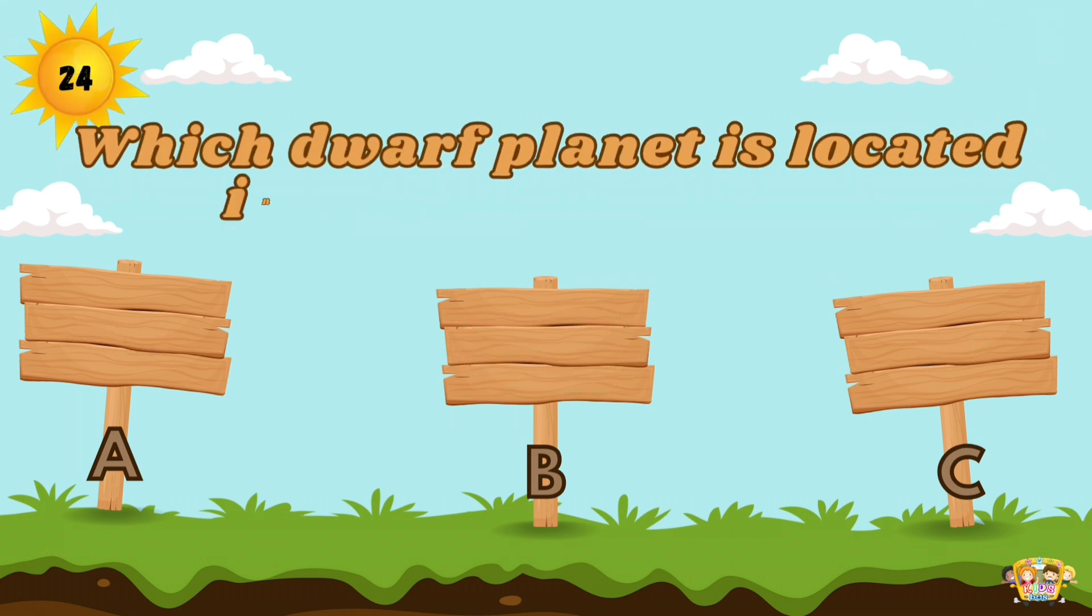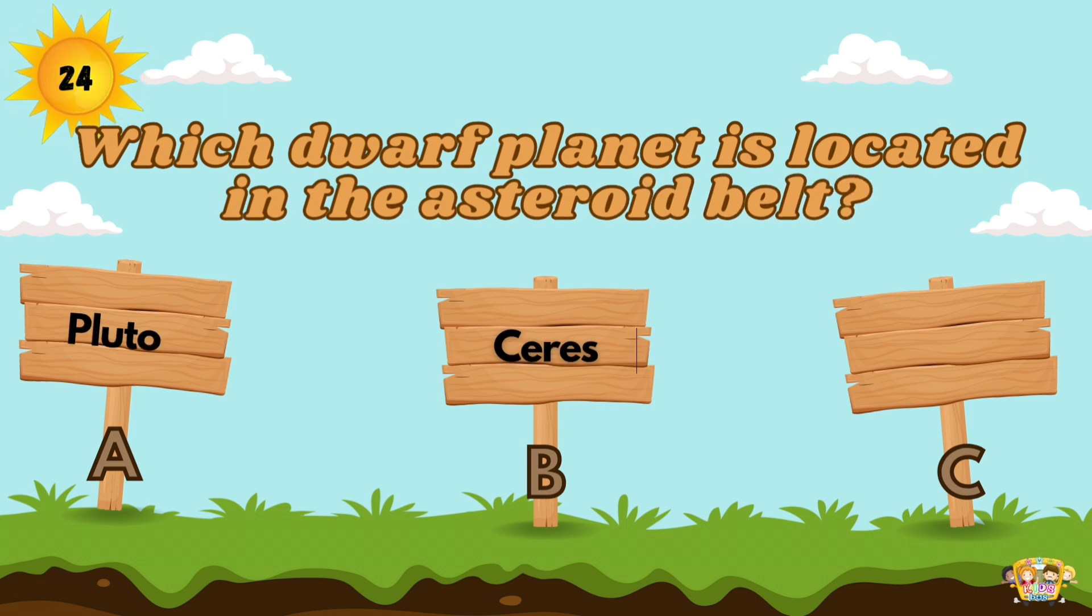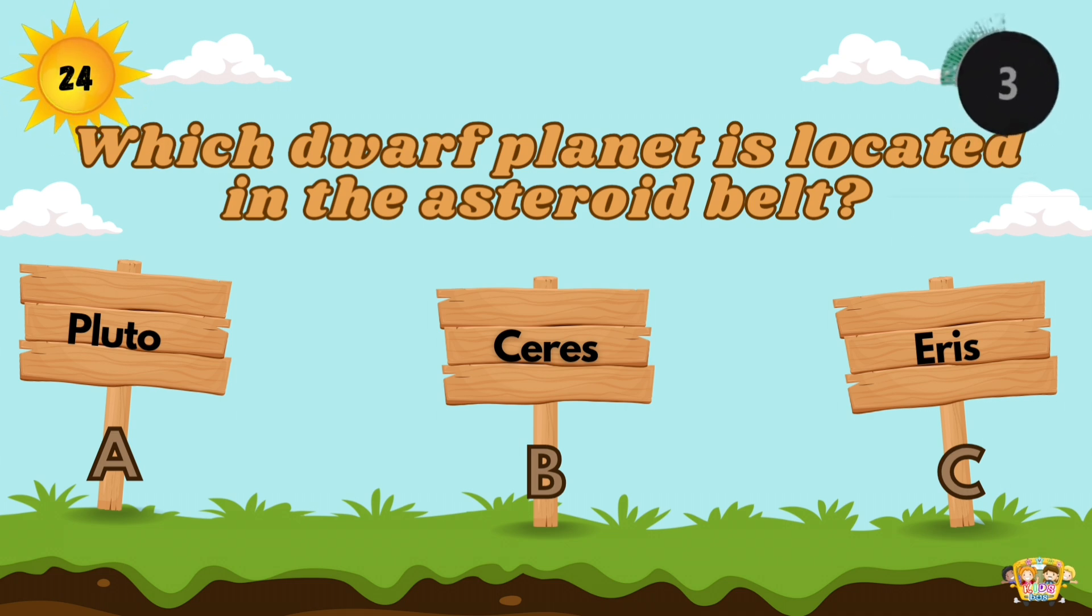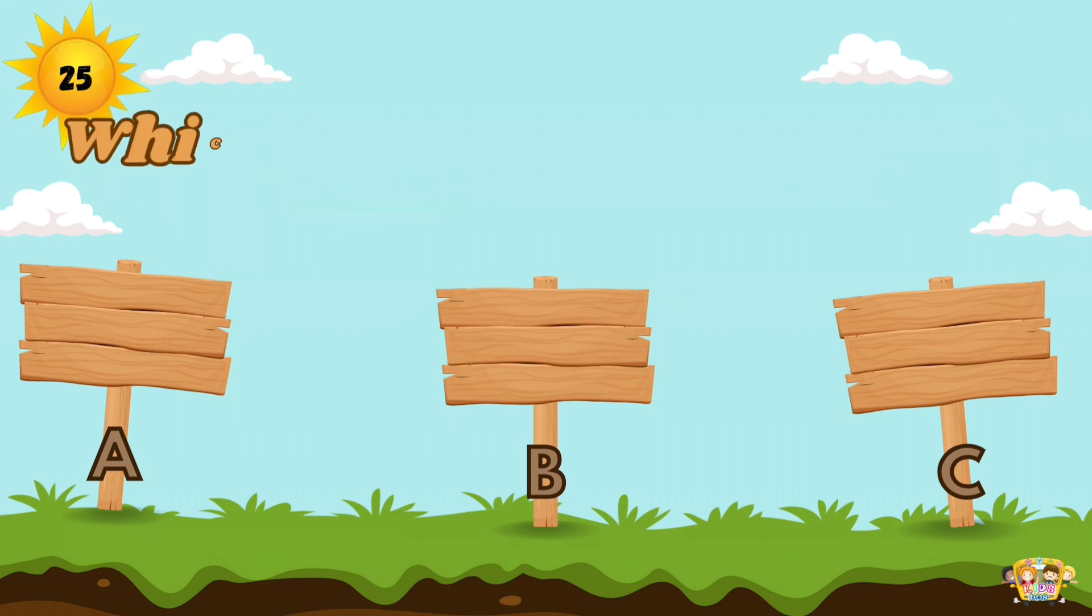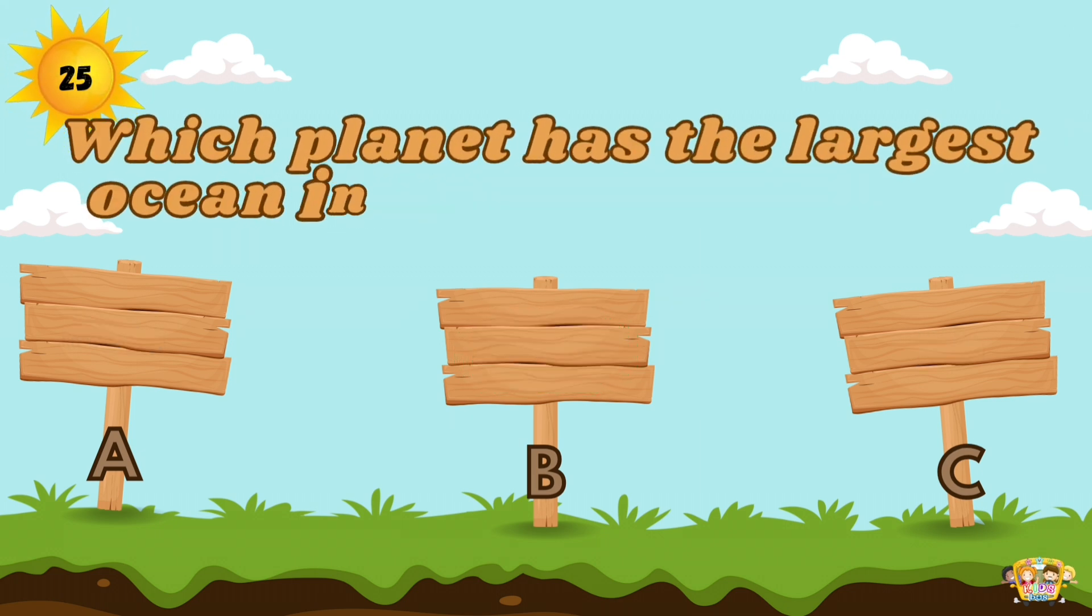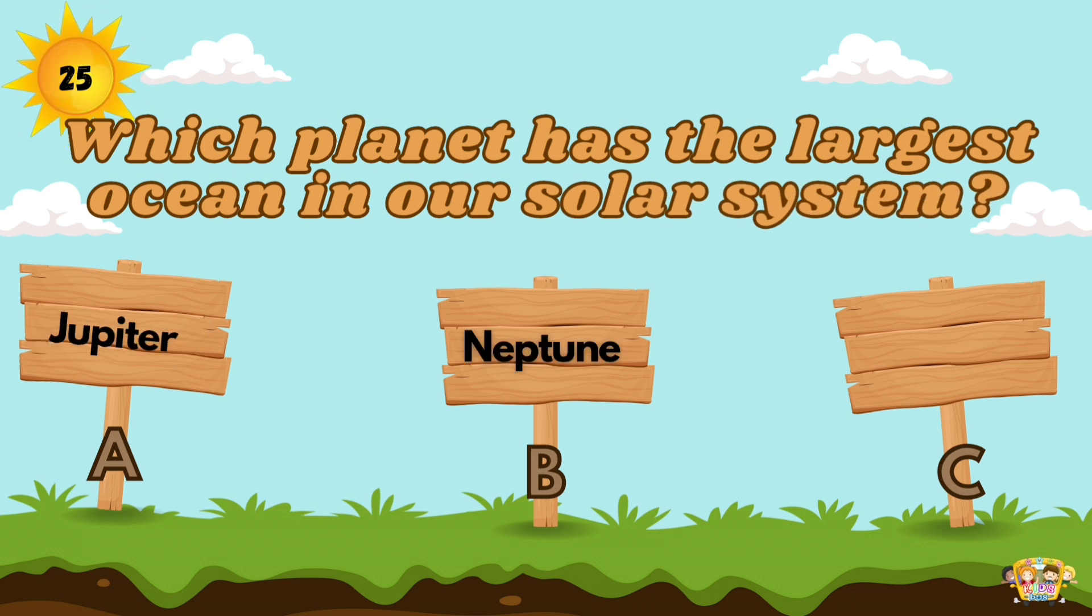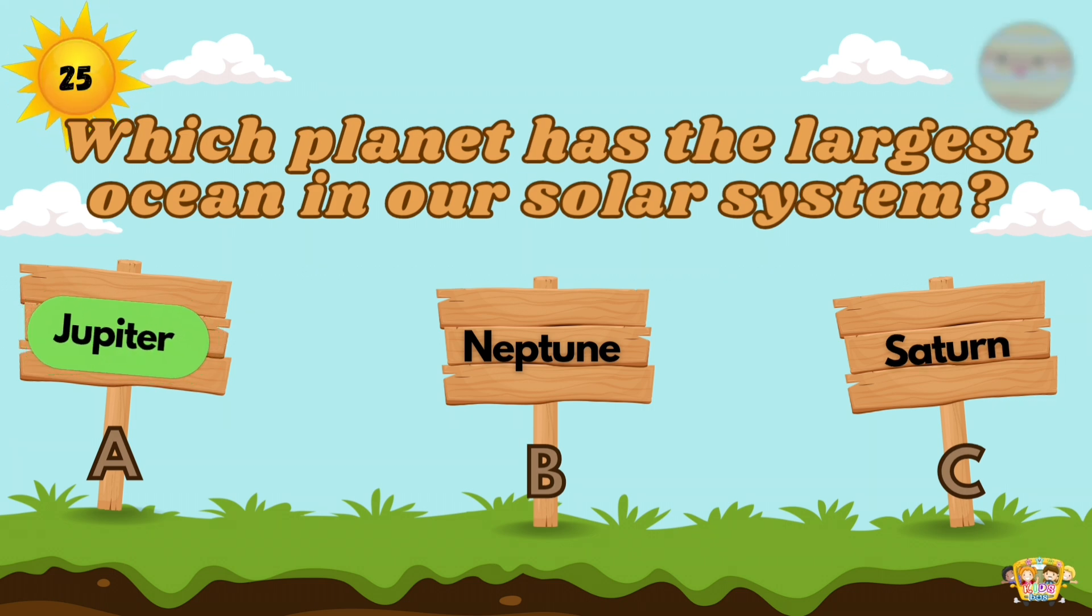Which dwarf planet is located in the asteroid belt? Ceres is the only IAU-recognized dwarf planet that resides in the main asteroid belt. Which planet has the largest ocean in our solar system? Jupiter has the largest ocean in the solar system, an ocean made of hydrogen instead of water.